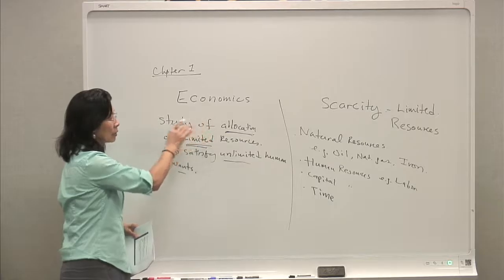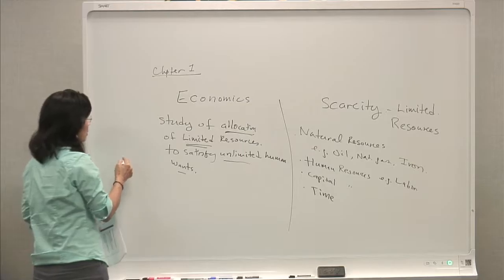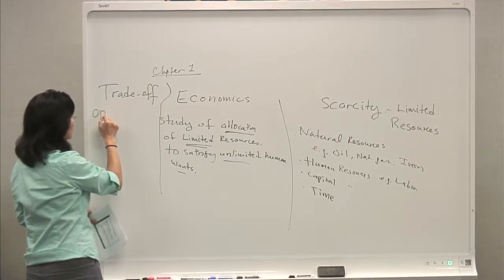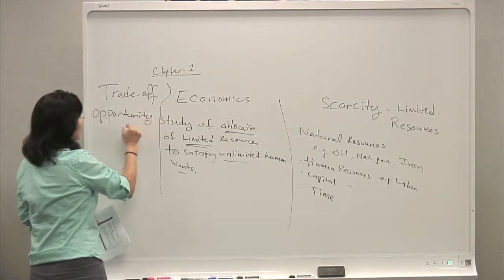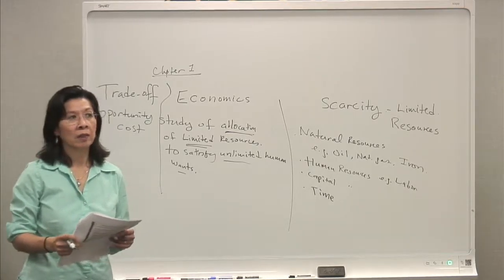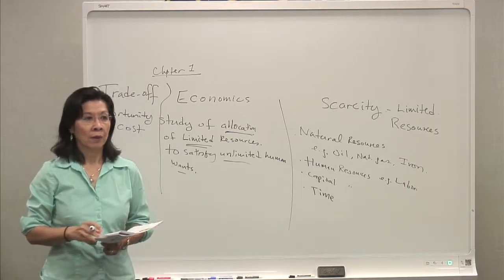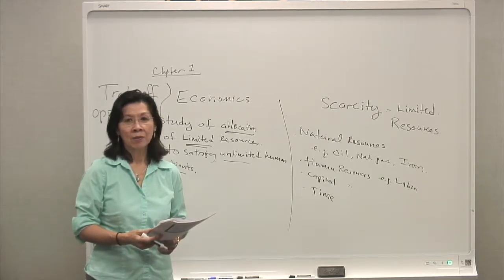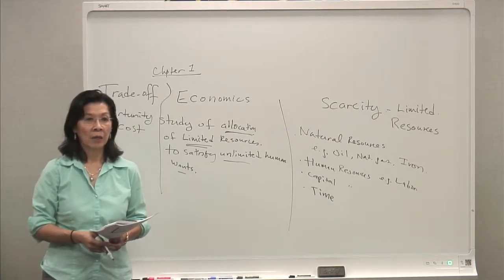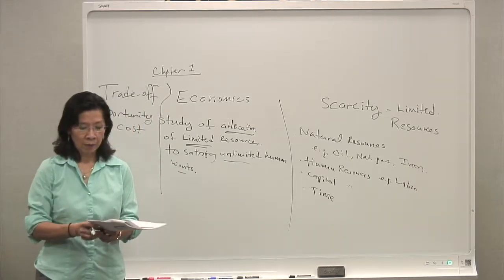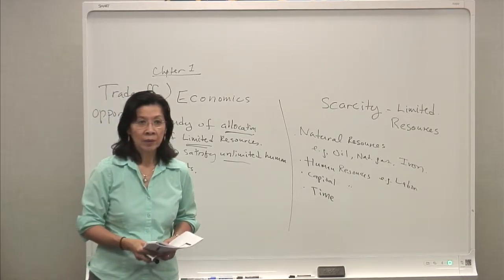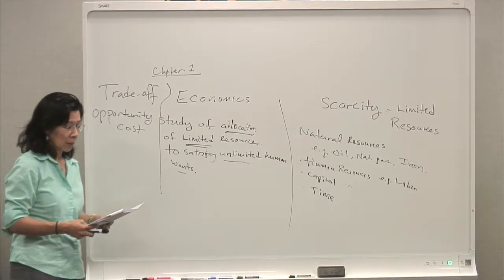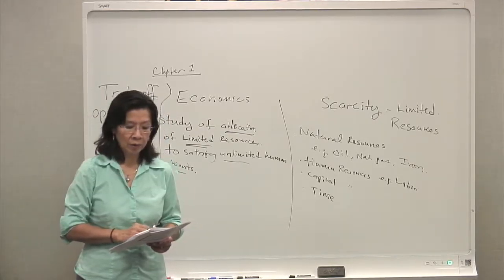Because of this scarcity, you have to make choices. In economics, when you make choices we call that the trade-off — another term for it is opportunity cost. The term opportunity cost is a big word in economics. For example, what is your opportunity cost of watching this video right now? You might say you could have used that half hour to sleep, to eat, or to go work out at the gym. Something you have to forego to do what you're doing now is called opportunity cost. The definition in your book says it is the foregone alternative of the choice made.